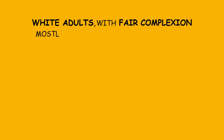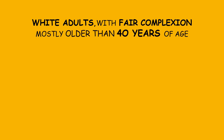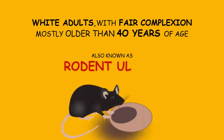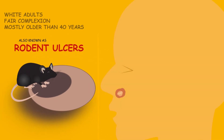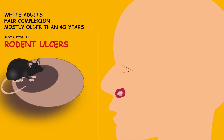Basal cell carcinoma mostly affects white adults with fair complexion, mostly older than 40 years of age. It is also termed the rodent ulcer — just as a rodent nibbles anything under it, similarly basal cell carcinoma locally destroys the skin and surrounding structures.